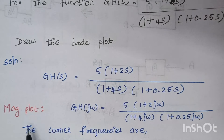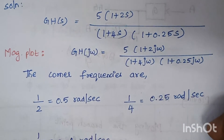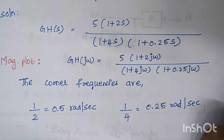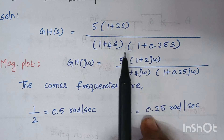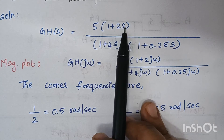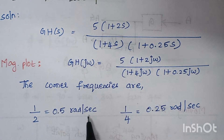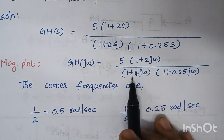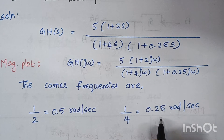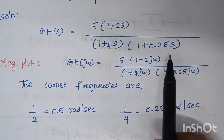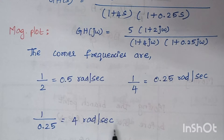The first step is to find the magnitude plot, and for that we need to find the corner frequencies. The corner frequencies are found by taking the reciprocal of the coefficient of s. The coefficient of s in the first term is 2, so the reciprocal is 1/2 = 0.5 rad/s. For the next term, the coefficient is 4, giving a corner frequency of 0.25 rad/s.